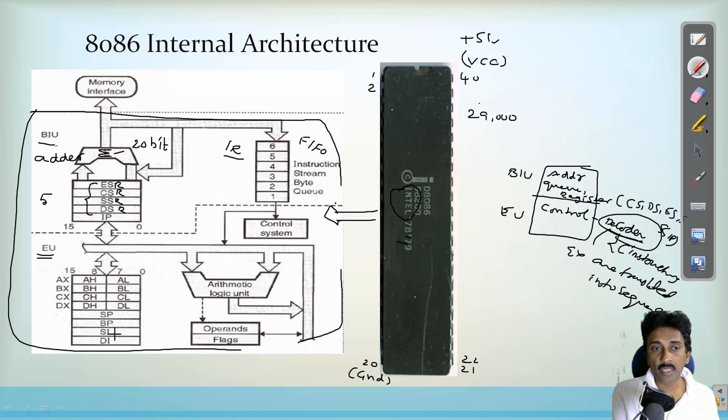As well as some index registers like SI and DI, source index register and destination index register, which is used for string manipulations and to access the data segment and extra segment also. So these are the offset registers we are using in the execution registers.